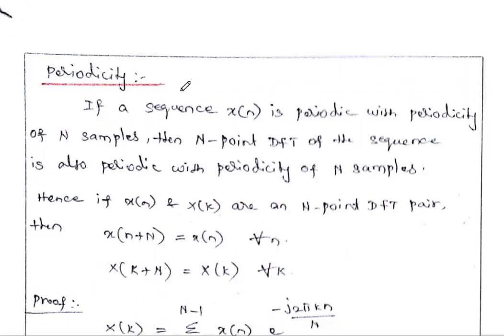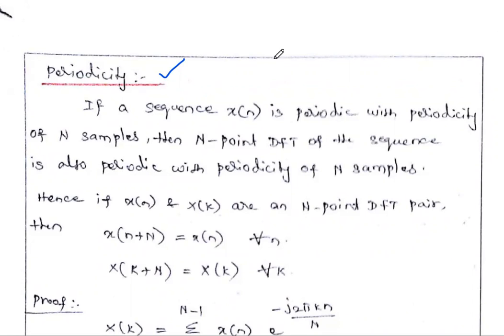The first property is the periodicity property. This periodicity property is not at all available in the continuous Fourier transform; it is available for the discrete Fourier transform. What does the periodicity property mean? Periodic means after a regular interval of time, the same values repeat again and again. That is called periodic.